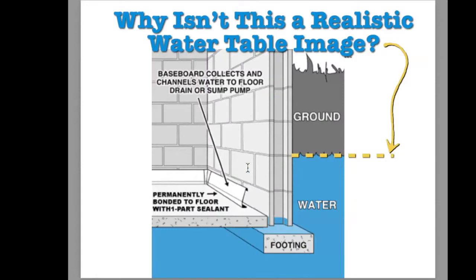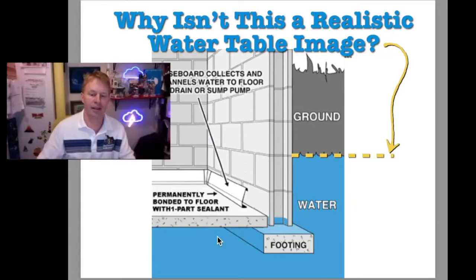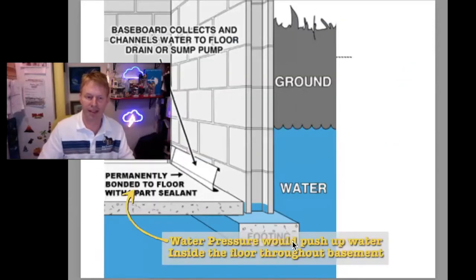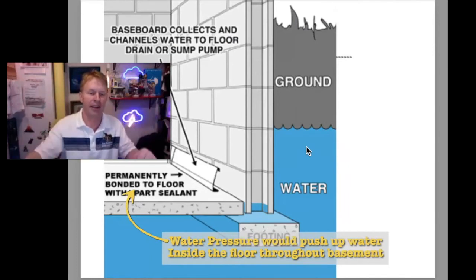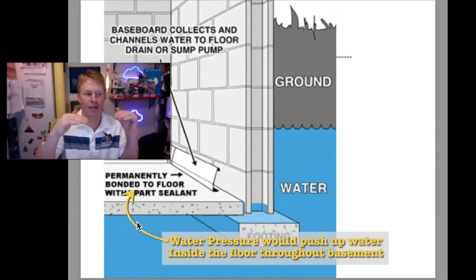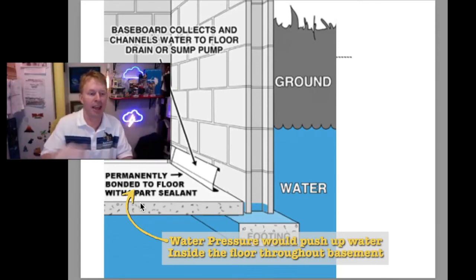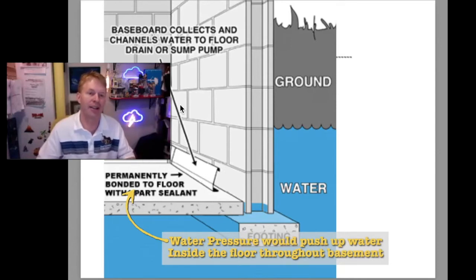This is a common contractor picture you'll see on a lot of business websites. Why isn't this a realistic water table image? You see the water is really high up on the foundation — totally under the floor — with a little drain tile thing here. The first big problem is: if you think about a high water table with water around the house at that level against the basement floor, we would have a certain amount of pressure pushing in. As you'd create an open space in that water plane or aquifer, it would literally push up everywhere in the basement. In this picture, they're not showing water pushing in — they're basically saying it's going to come in around the corner and these baseboard collectors will catch it.